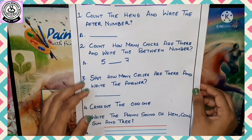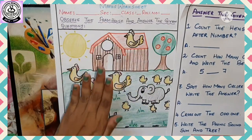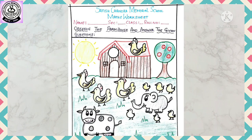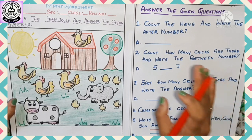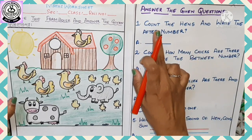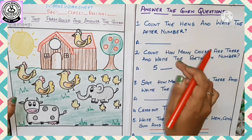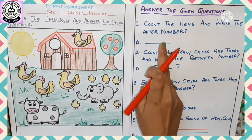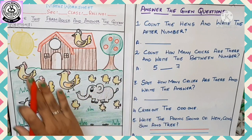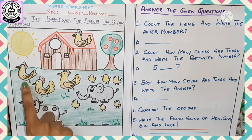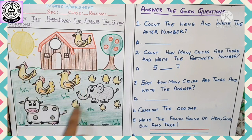We have to answer these five questions. Observe this picture carefully first. Okay, let's go to the first question — count the hands and write the after number. We have to count the hands. Can you see any hands here? Yes, over here — one, two, three. We have three hands here.